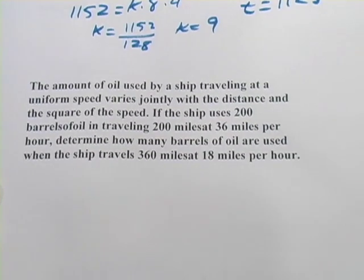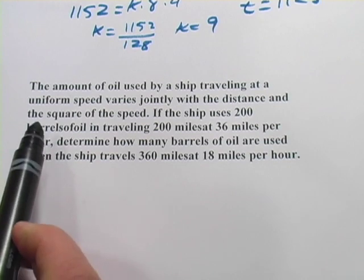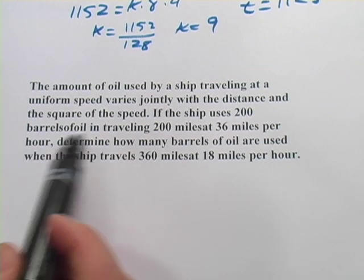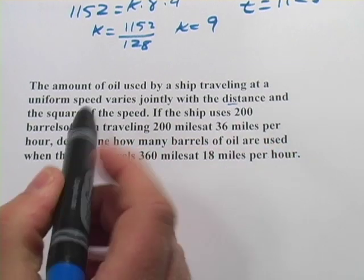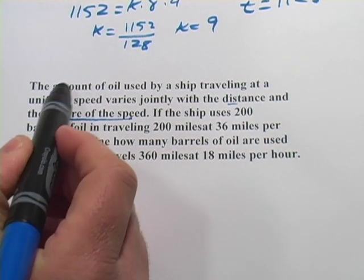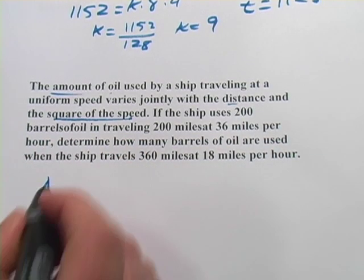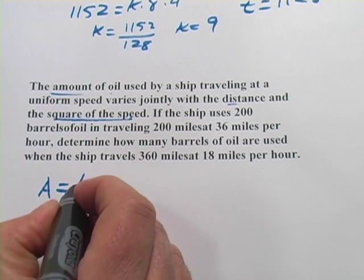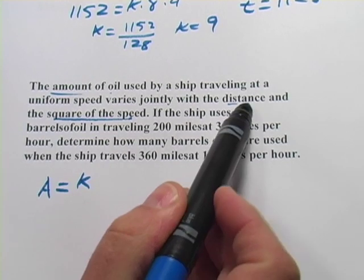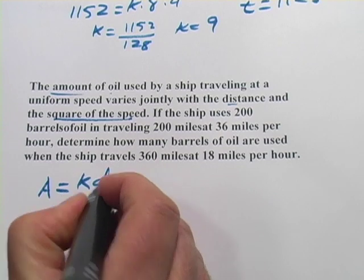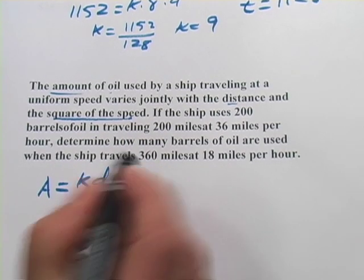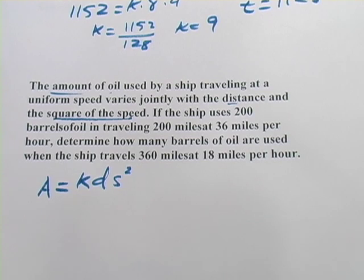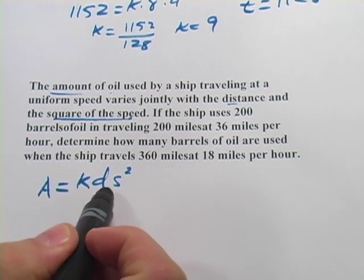This one says the amount of oil used by a ship traveling at a uniform speed varies jointly with the distance and the square of the speed. So amount of oil, let's call that A, varies with the distance, call that d, and the square of the speed. So speed squared, that's an s there. That's our formula.